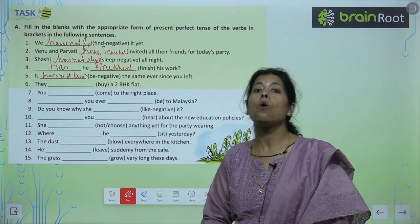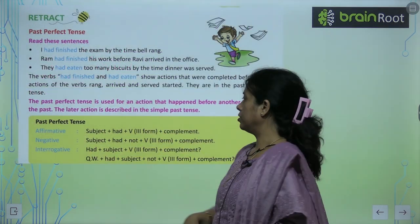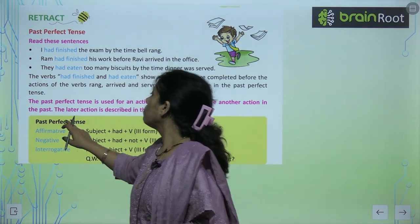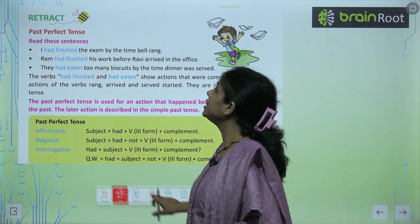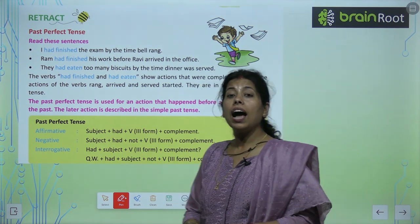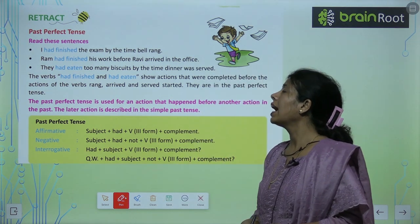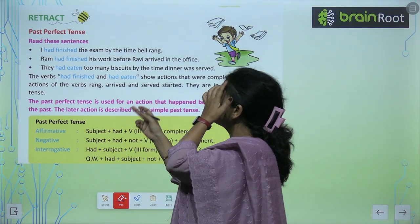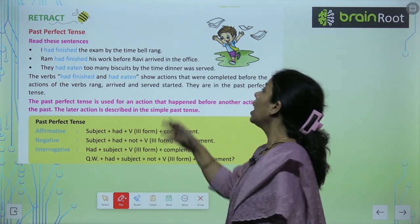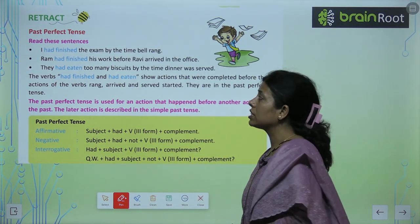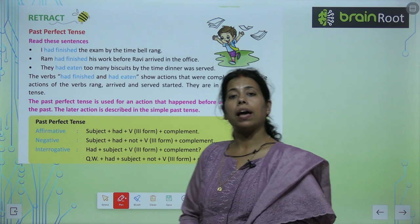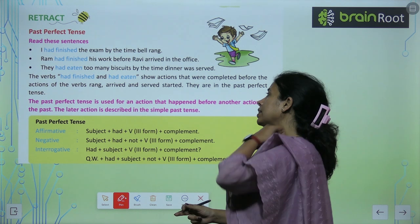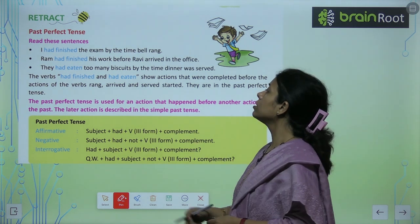Now these remaining sentences are homework for you. Past perfect tense. Read these sentences: I had finished the exam by the time the bell rang. Ram had finished his work before Ravi arrived in the office. He had eaten two biscuits by the time dinner was served.